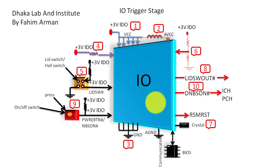Step seven: crystal frequency enters the IO chip. Step eight: lid switch out hash signal. Step nine: the on/off switch and its signal. Step ten: GNVS on signal, which enters the ICH or PCH. Step eleven: communication with BIOS. Step twelve — the last step: RSM-RST, which is the final and most important output of IO triggering.